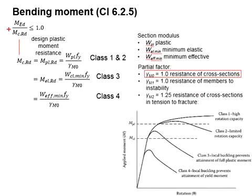When the resistance is greater than the load, the ratio will be less than 1.0. A satisfactory section will have the ratio to be less than 1.0.